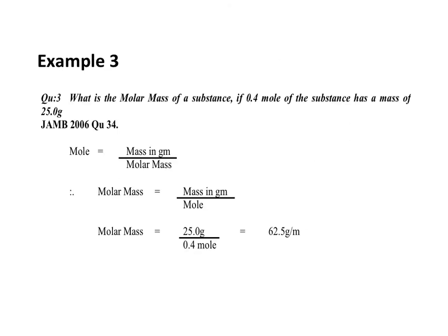Example 3. What is the molar mass of a substance if 0.4 mole of a substance has a mass of 25.0g? Stating a relationship between mole, mass, and molar mass: mole is equal to mass in grams all over molar mass. So molar mass equals mass in grams over moles. Therefore molar mass is equal to 25.0g all over 0.4 mole, which is equal to 62.5g per mole.